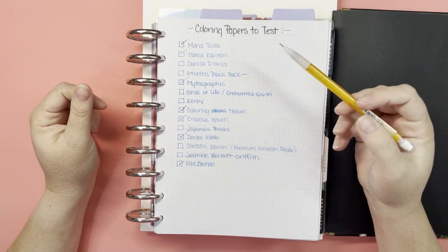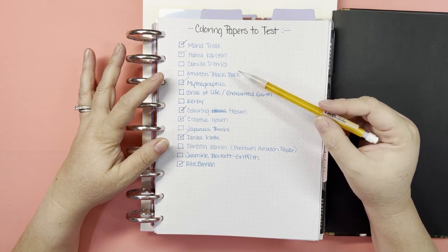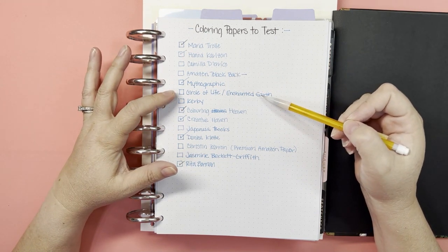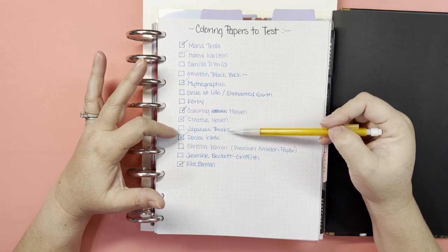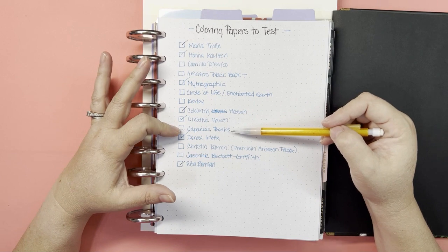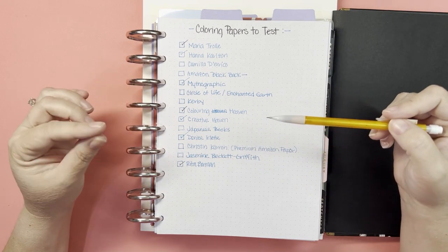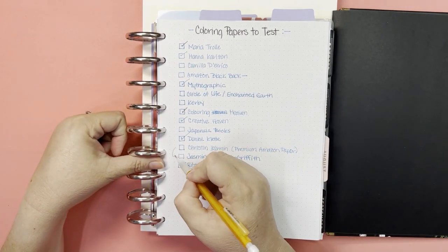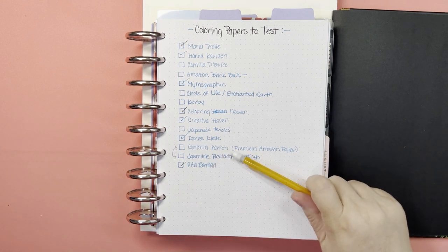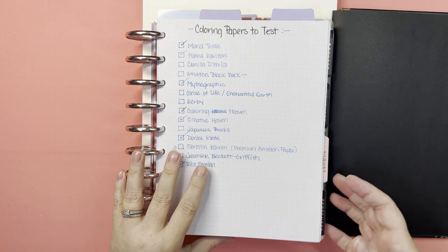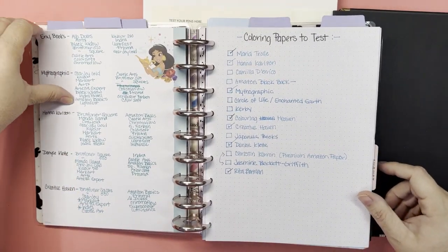The Camilla Derico Amazon black back, the Circle of Life or the Melpomeni C books, Kirby books, the Japanese like the Ururi Maus books those ones, the Christine Karron, the premium paper, which I think these two are the same paper, so I might just do one for both. The Jasmine Beckett Griffith.